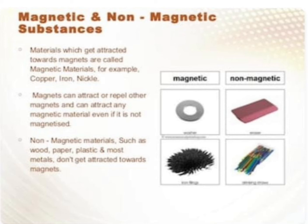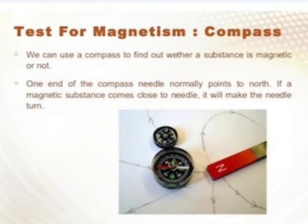Magnets can attract or repel other magnets and can attract any magnetic material even if it is not magnetized. Non-magnetic materials such as wood, paper, plastic, and most metals don't get attracted towards magnets. Non-magnetic materials कौन से होते हैं? Non-magnetic materials are the materials which don't get attracted — जो magnet की तरफ attract नहीं होते।